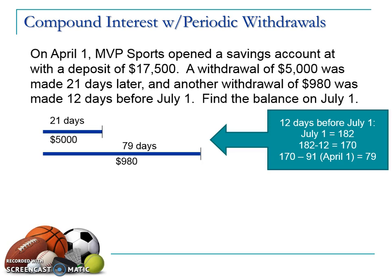We need to determine what day is 12 days before July 1st. If we look up July 1st, we find it's the 182nd day of the year. 182 minus 12 tells us that is the 170th day — that's the day the money was withdrawn. The initial deposit was made on April 1st, which is the 91st day. So 170 minus 91 is where the 79 days comes from. That withdrawal of $980 was made 12 days before July 1, meaning that money sat in the account from April 1st for 79 days compounding.